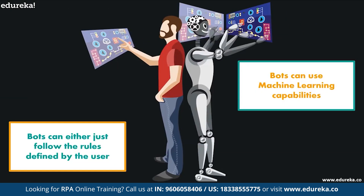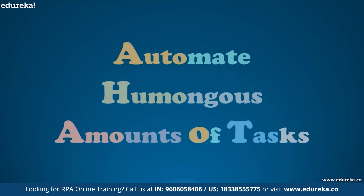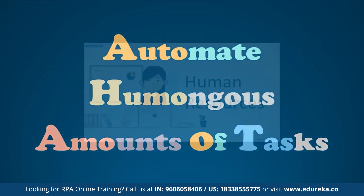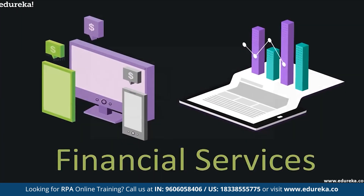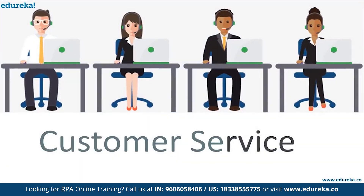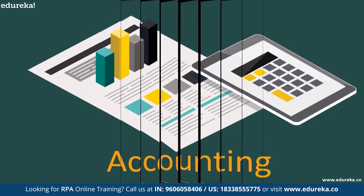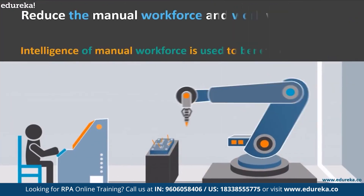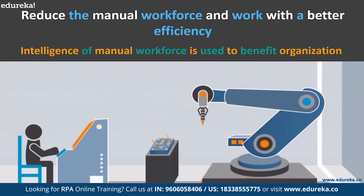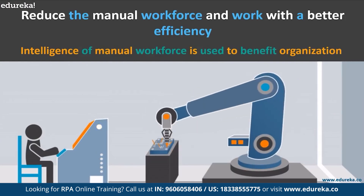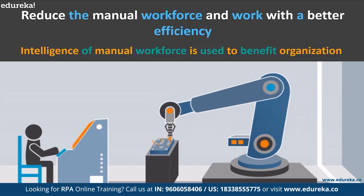These bots can either follow rules defined by the user or use machine learning capabilities to suggest recommendations and generate meaningful results. RPA can also be used to automate a huge number of tasks in fields such as human resources, financial services, healthcare, supply chain management, customer service, accounting, and more. Each industry can use RPA in its own way to reduce the manual workforce, work with better efficiency, and ensure that the intelligence of the manual workforce is used in a better way to benefit the organization.